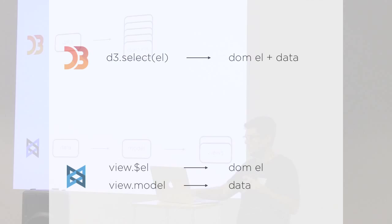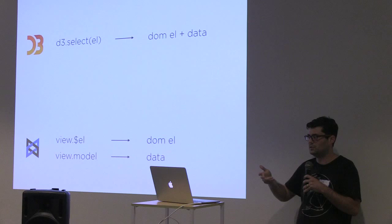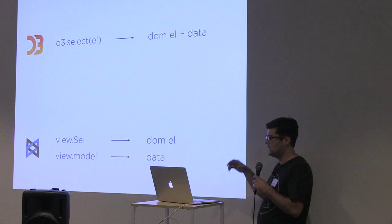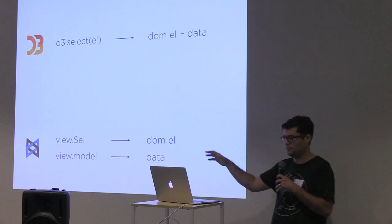If you're working backwards to your data and elements, in D3 you can just wrap any element in a D3 selection if you know how to find it in the DOM. That gives you access to a combination of the DOM element itself, its attributes, and the data attached to it. With Backbone, the view is the locus of this information, but it's represented separately — you have a jQuery or Zepto wrapped DOM element for DOM manipulation, and the model attached to the view represents the data.